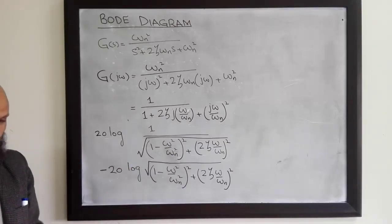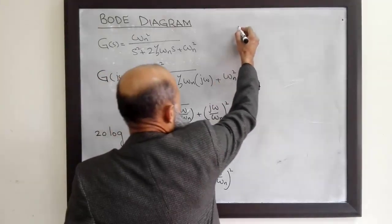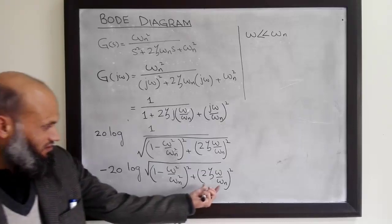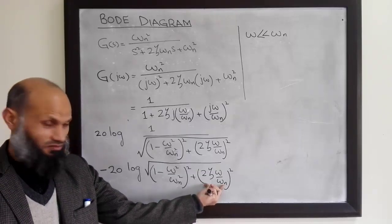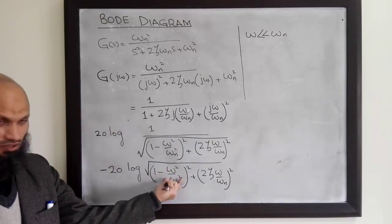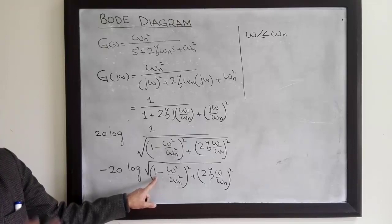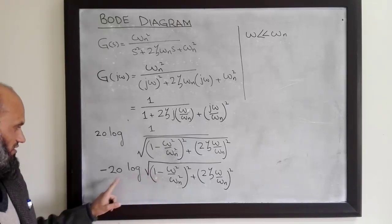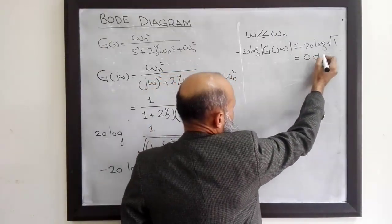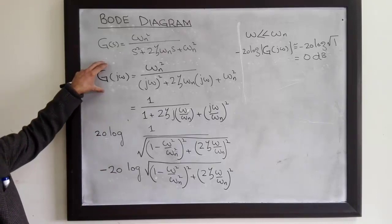We split the whole frequency range into two regions: smaller frequencies and larger frequencies. For frequencies ω much less than ωn, the term ω²/ωn² is much smaller and can be ignored. So we have minus 20 log of the square root of 1, which is approximately 0 dB. At low frequencies, the magnitude of this complex number is 0 dB.